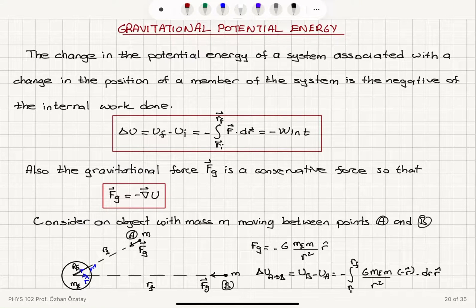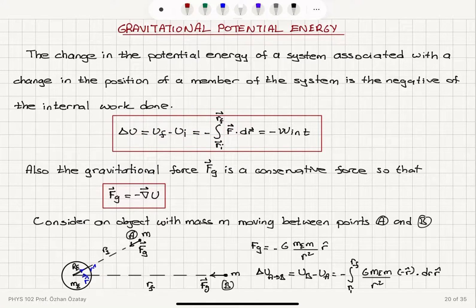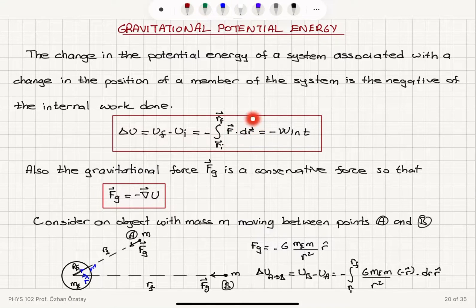Gravitational potential energy. The change in the potential energy of a system associated with a change in the position of a member of the system is the negative of the internal work done. So delta U — final potential energy minus initial potential energy — is minus the integral from the initial position vector to the final position vector of the dot product of force with incremental displacements. This is basically minus W internal.